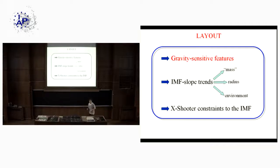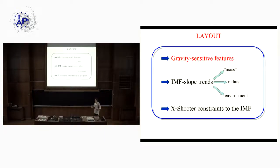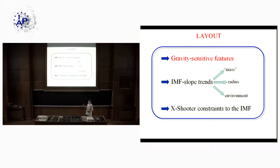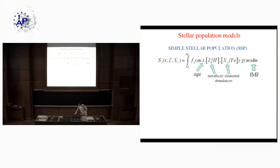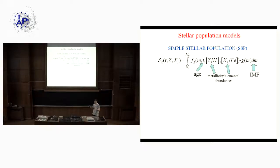A short introduction about what the gravity-sensitive features are and how we use them to constrain the stellar IMF. In nearby stellar associations we can count the stars directly and infer the IMF, which seems consistent with a Kroupa-like universal distribution. When we go to distant galaxies we cannot count the stars, so we have to rely on indirect methods — the most powerful of which is provided by the gravity-sensitive features. We compare the spectra of galaxies to models in order to infer the IMF and other stellar population parameters, done through stellar population models.